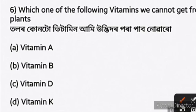Question six: which one of the following vitamins cannot be obtained from plants? The answer is vitamin D, because it requires sunlight to be synthesized properly.